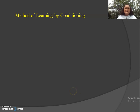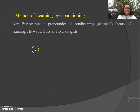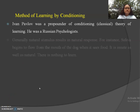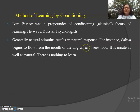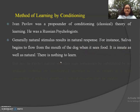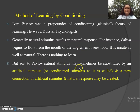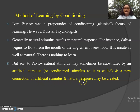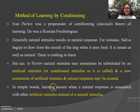The method of learning by conditioning — the last method. Ivan Pavlov was the proponent of the classical theory of conditioning. He was a Russian scientist. Generally, a natural stimulus results in a natural response. For instance, saliva begins to flow from the mouth of a dog when it sees food — this is innate and natural. But according to Pavlov, a natural stimulus may sometimes be substituted by an artificial or conditioned stimulus, and a new connection between the artificial stimulus and the natural response may be created. In simple words, learning occurs when a natural response is associated with an artificial stimulus instead of the natural one.